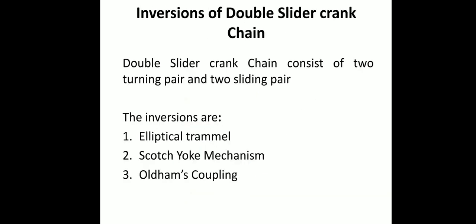Now we will discuss inversions of the double slider crank chain. There are three types of inversions for a double slider crank chain. They are: elliptical trammel, Scotch yoke mechanism, and Oldham coupling. They are used for elliptical motion, linear-to-rotary motion conversion, and power transmission between parallel shafts.